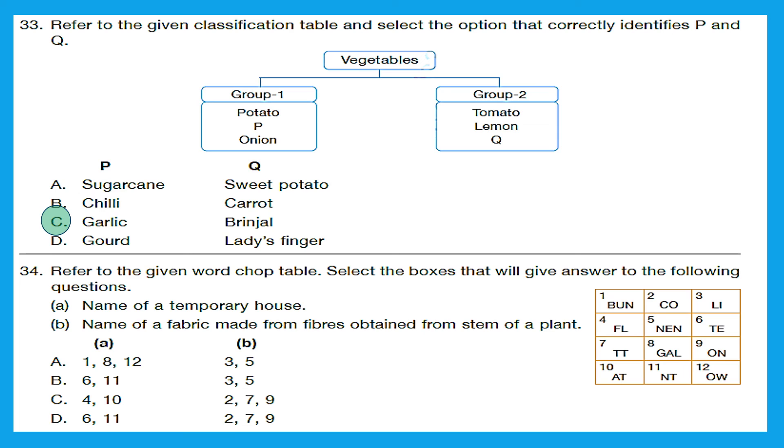Question 34. Refer to the given word table. Select the boxes that will give answer to the following questions. A, name of a temporary house. It could be tent. B, name of a fabric made from fibers obtained from stem of a plant. And that is linen. So let's see. How do we make tent? It is 6 and 11. Do we have 6 and 11 anywhere? Yes, under A of option B, 6 and 11 is there. Now let's make linen. It is 3 and 5, and option B has 3 and 5 for B. So option B is the right answer.